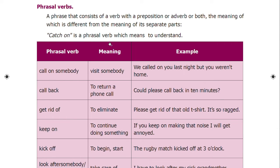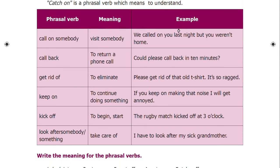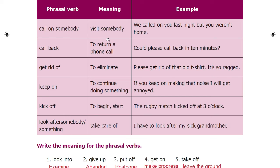For example: 'catch on' is a phrasal verb meaning to understand — 'If you do this, you will catch on.' Other phrasal verb examples: 'call on somebody' means to visit somebody. 'Call back' means to return a phone call. 'Get rid of' means to eliminate. 'Keep on' means to continue doing something.